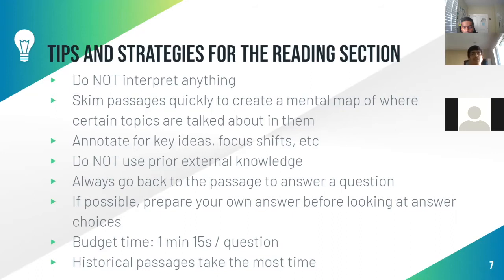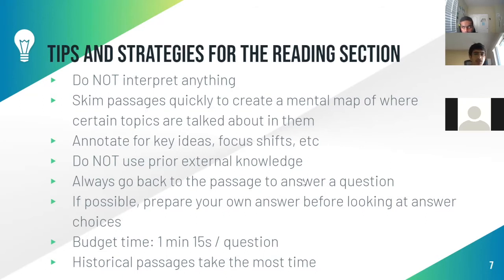Do not use external knowledge. Say the passage is about DNA and you already know how it's made — don't use that knowledge. Only use what's given in the passage. Sometimes the information given on the SAT will differ from what you know, or the passage won't mention things you know, which could lead you to choose a wrong answer unsupported by the text. Always go back to the passage to answer every question.